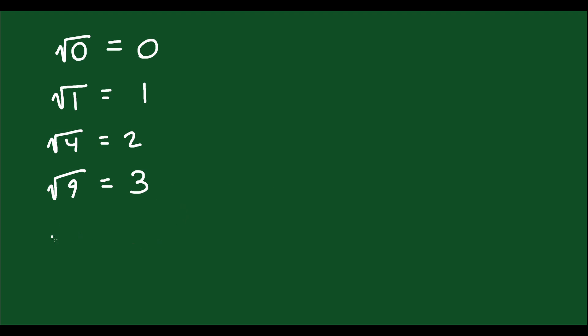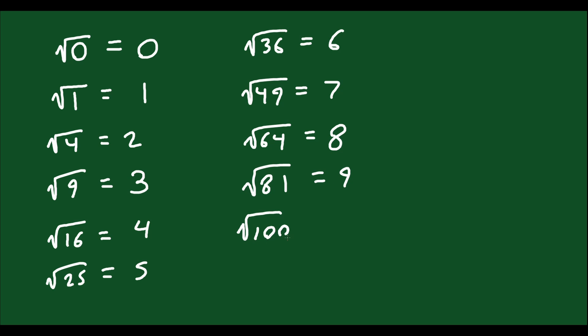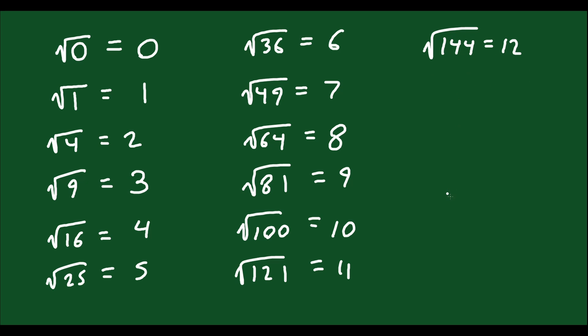Square root of 9 is 3. Square root of 16 is 4. Square root of 25 is 5. Square root of 36 is 6. Square root of 49 is 7. Square root of 64 is 8. Square root of 81 is 9. Square root of 100 is 10. Square root of 121 is 11. Square root of 144 is 12. I would recommend trying to remember these ones — and once they become second nature, practice learning higher ones like 13, 14, 15, and see how high you can go. But for now, these are the ones you should be most familiar with.